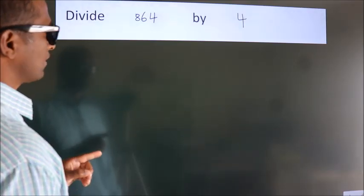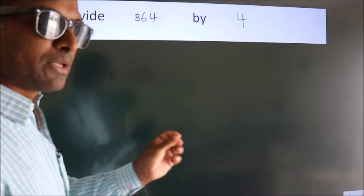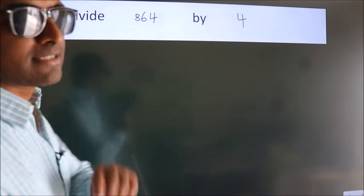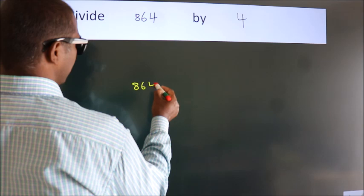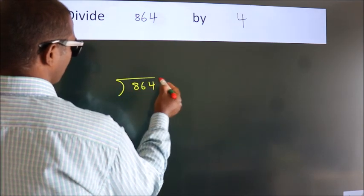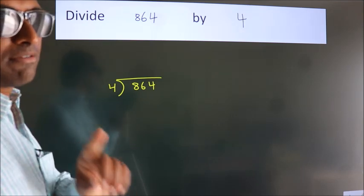Divide 864 by 4. To do this division, we should frame it in this way. 864 here, 4 here. This is your step 1.